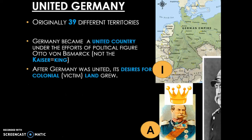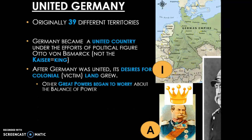After Germany was united, we're going to see that it starts to practice even more imperialism. Go ahead and fill in that first bubble with an I for imperialism. After it was united, Germany's desires for colonial — meaning new land — grew. Before World War I even started, we're going to see Germany stretch in and try to take territory from Russia, from its neighbors to the south like the Austro-Hungarian area, and we already know they took territory from France. They're pretty much land hungry. Other great powers began to worry about the balance of power, as Germany also sailed to Africa, Asia, and Latin America to try to take territory there.